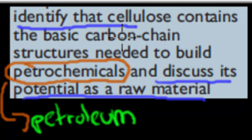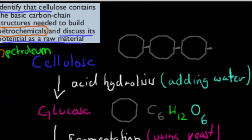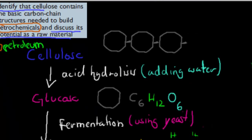There are two parts to this objective: identify that cellulose contains the basic carbon chain structure needed to build petrochemicals, and discuss its potential as a raw material.